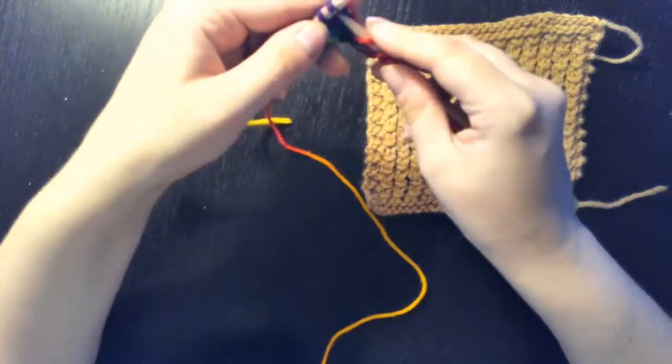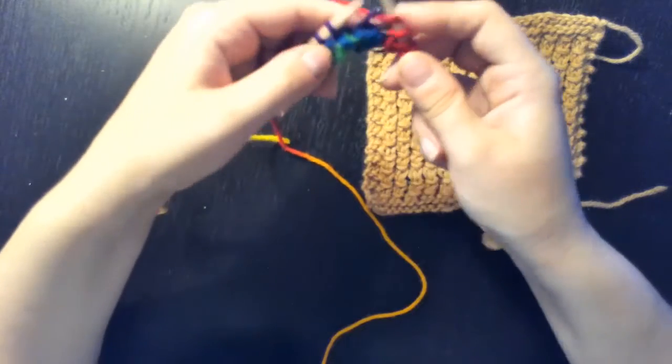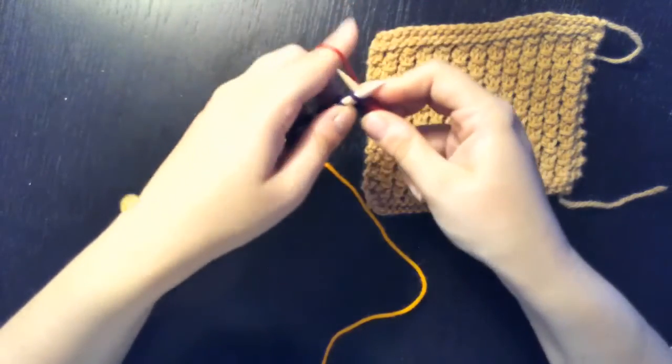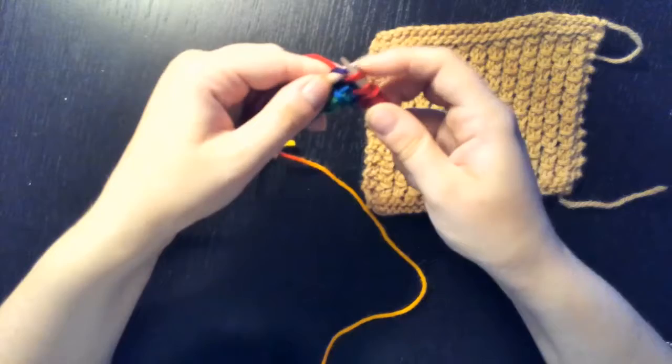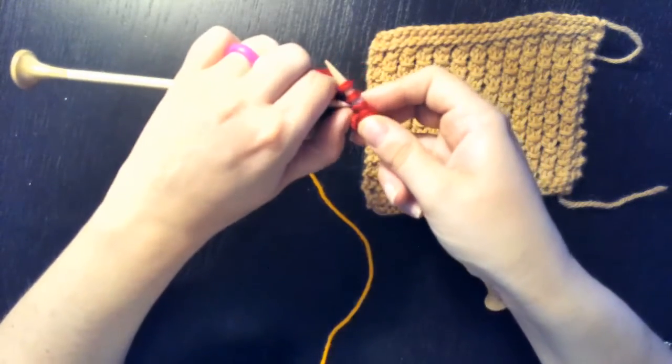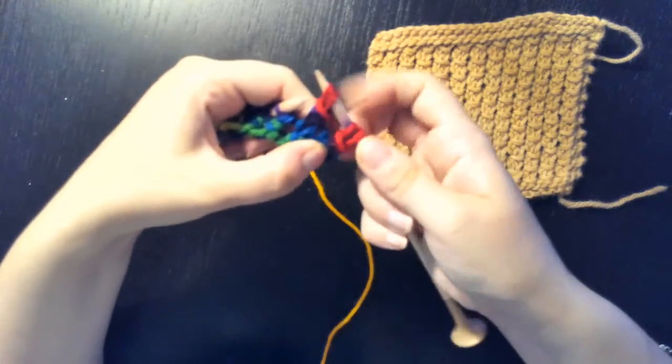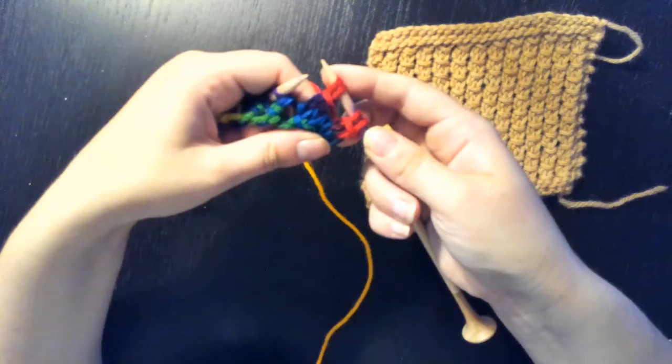You're going to yarn over again, knit two more, yarn over, and then go back and pull up that yarn over, pull it over your two knits, and you have another stitch done.